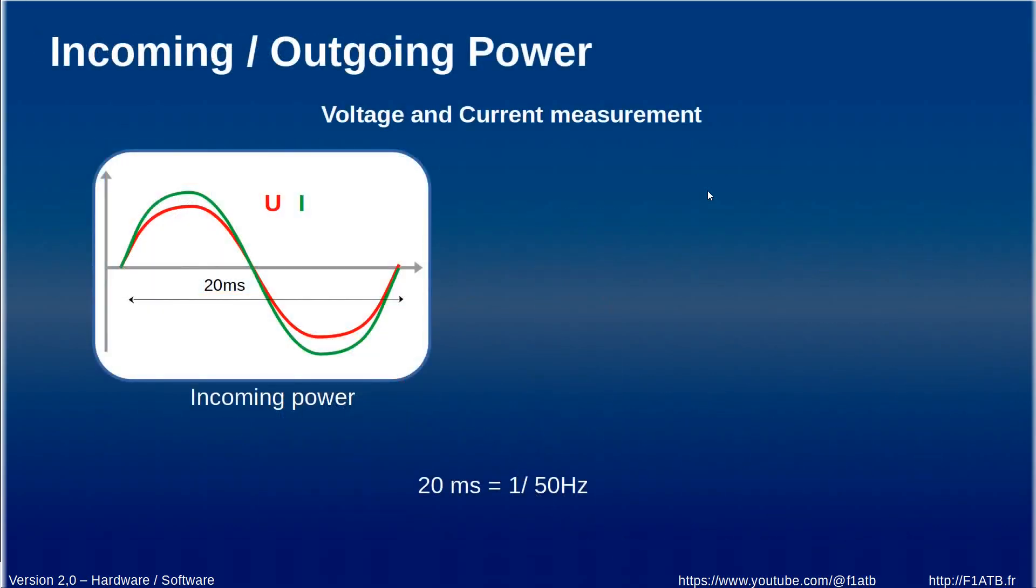If you look at the incoming power and we analyze deeply the voltage and the current during the 20 milliseconds of a period of the 50 hertz period of the alternative current. We can see that we have here the voltage in red, the current in green and they are all moving together what we called in phase.